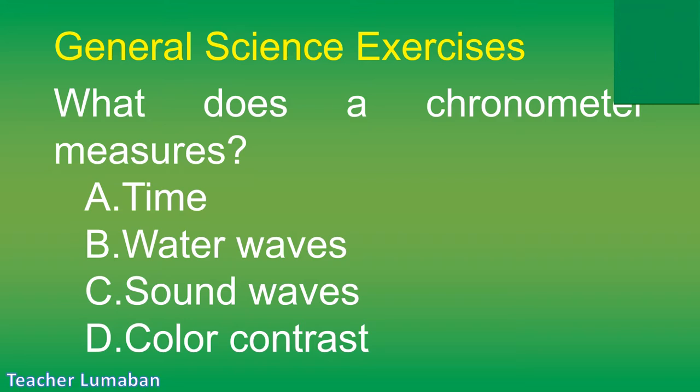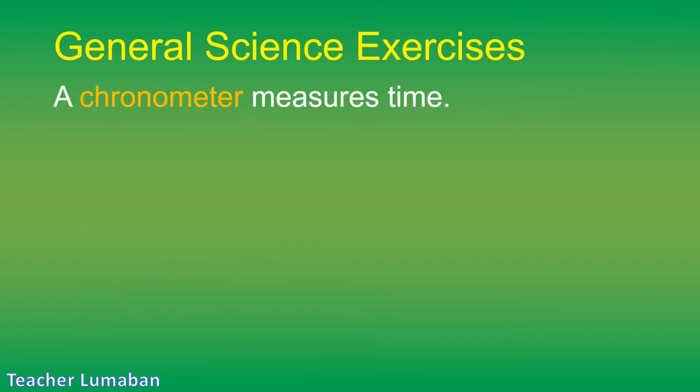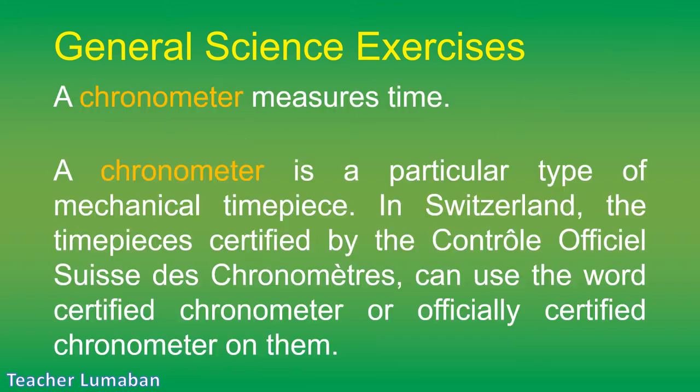The correct answer is Letter A: time. A chronometer measures time. A chronometer is a particular type of mechanical timepiece. In Switzerland, the timepieces certified by the Contrôle Officiel Suisse des Chronomètres can use the word 'certified chronometer' or 'officially certified chronometer' on them.